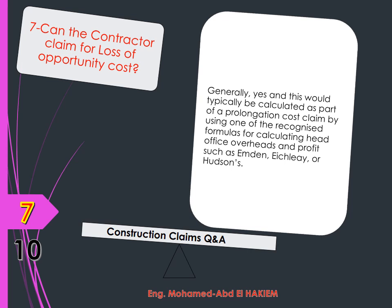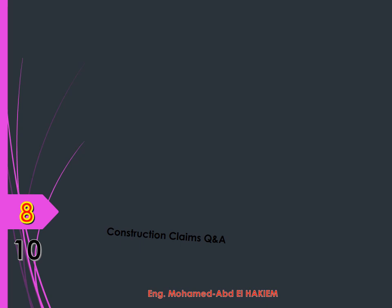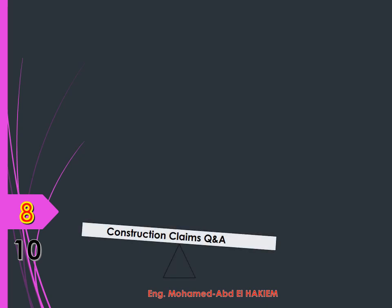Question 7: Can the contractor claim for loss of opportunity cost? Answer: Generally yes, and this would typically be calculated as part of a prolongation cost claim, under head office overheads and profit, using formulae such as Emden, Eichleay, or Hudson's. The contractor could miss taking on another potential project using his resources had he not been delayed by the employer on the current project, due to his resources being tied up for longer than foreseen.